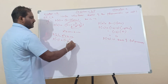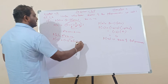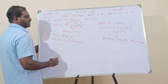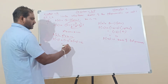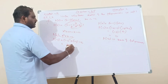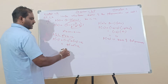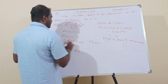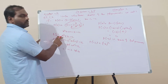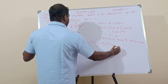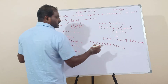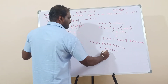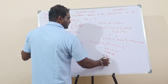Now substituting into the expanded form: p of minus 1 gives minus 1 whole squared plus minus 1 minus 2. That is plus 1 minus 1 minus 2, which gives minus 2, not equal to 0. For p of minus 2: minus 2 whole squared plus minus 2 minus 2. Minus 2 whole squared is plus 4. So 4 minus 2 minus 2 equals 0. Therefore it is 0.